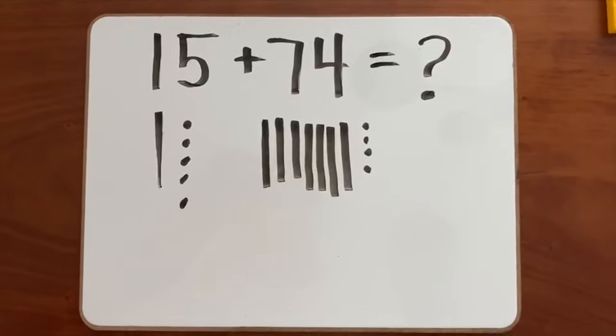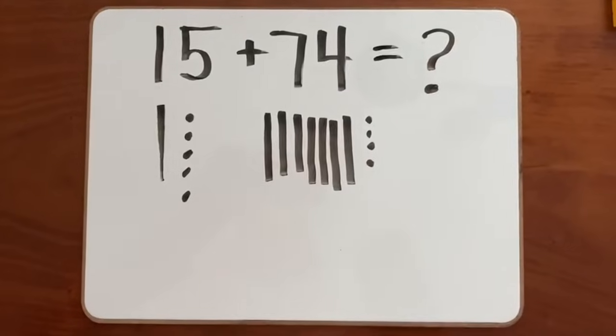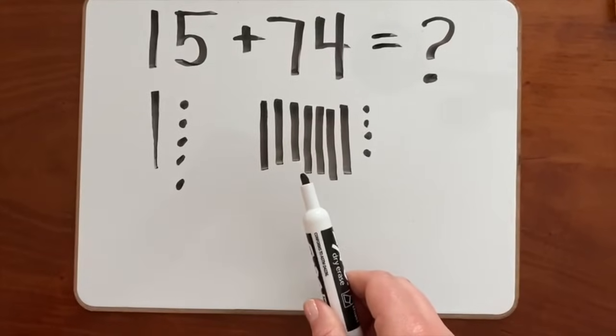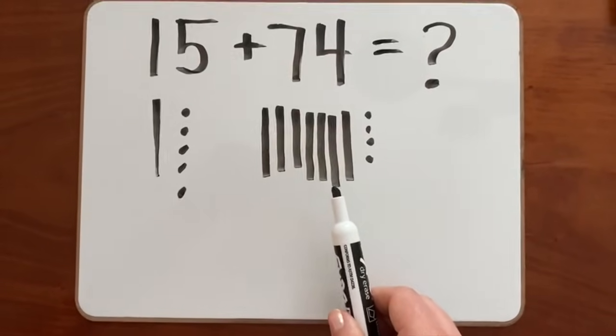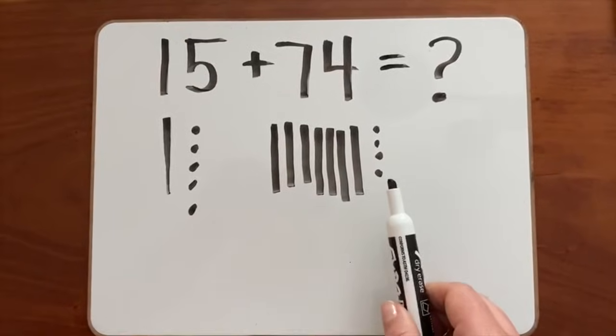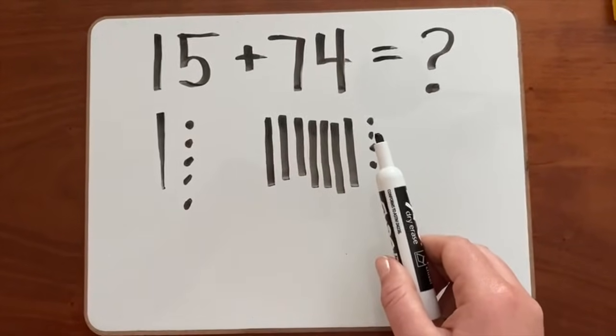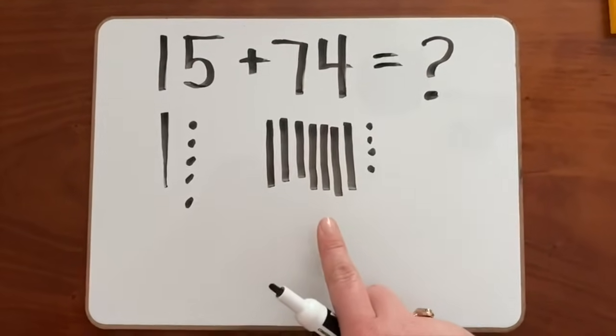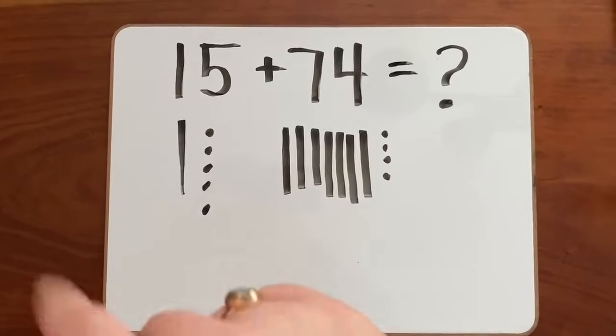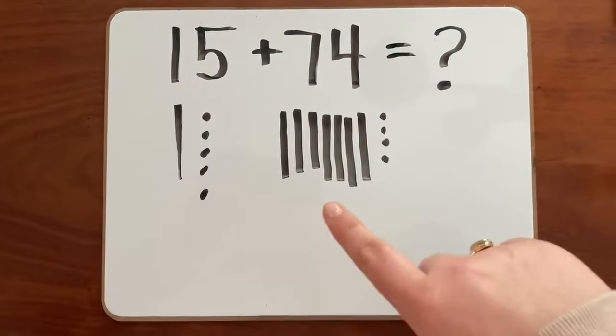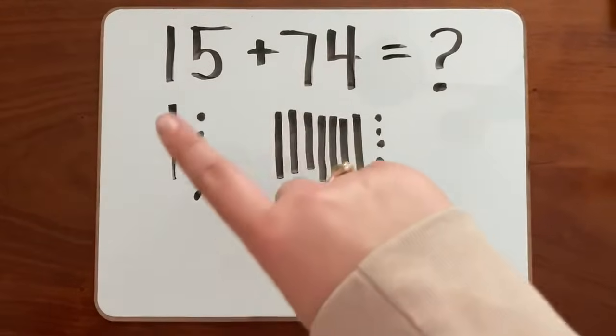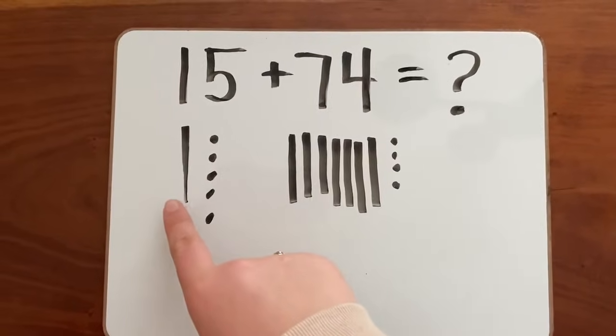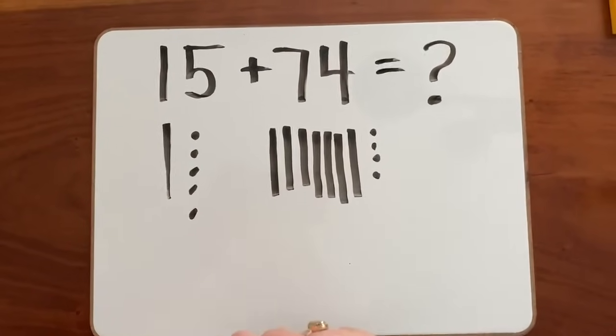Let's count the pictures that we drew to see if it matches the number 74: 10, 20, 30, 40, 50, 60, 70, 71, 72, 73, 74. So we also made the number 74. The last step is to count all of our longs and cubes or all of our tens and ones that we drew. Remember, we count our tens first. So those are each of these straight lines. Let's count those first.